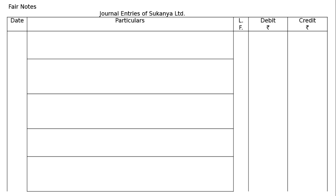Now for the journal entries of Sukanya Ltd. Draw the journal format with columns: Date, Particulars, Ledger Folio, Debit (₹), and Credit (₹).